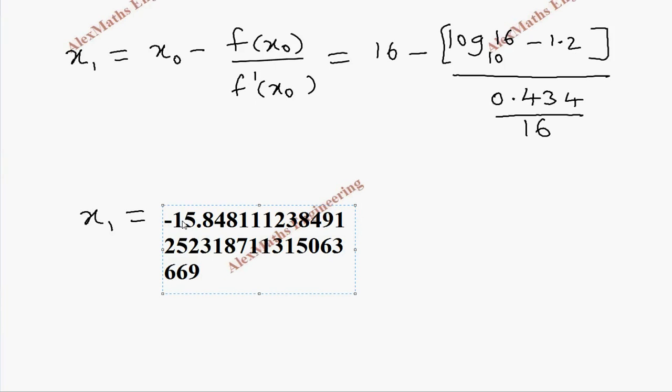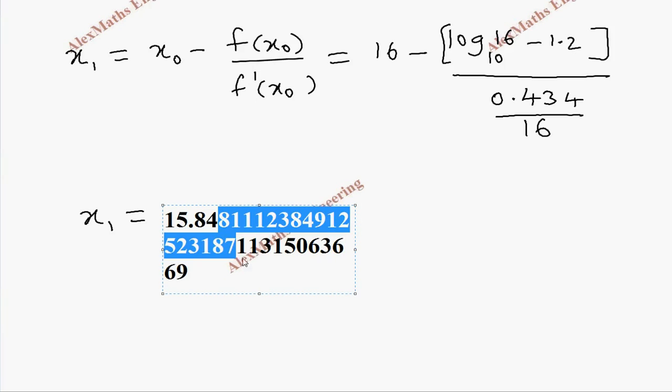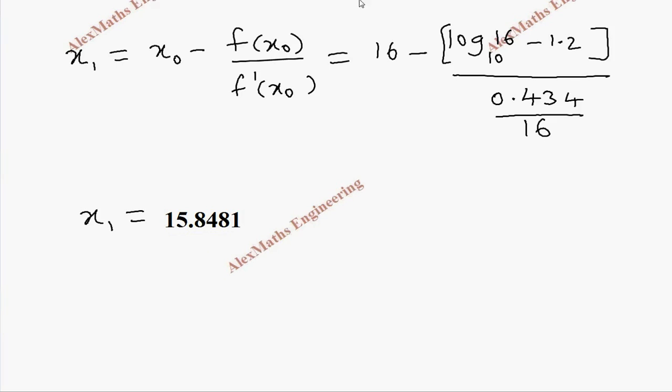So this value, let's copy here. So this will be, we don't need this minus. Let's round up to 4 decimal places. So 1, 2, 3, 4. So we remove all these numbers. So this is our x_1.